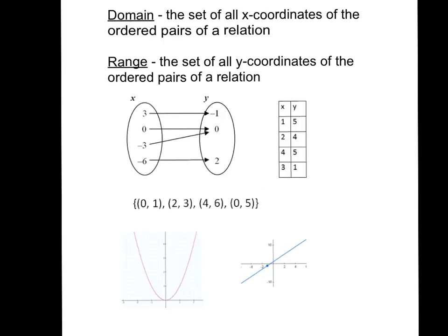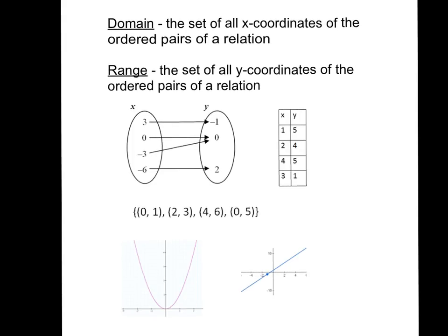That means that our domain is 1, 2, 4, and 3. So when I write it, it's a good idea to write it in ascending order. So our domain is {1, 2, 3, 4}. Our range, or our outputs, are 5, 4, 5, and 1. So I would write {1, 4, 5}.